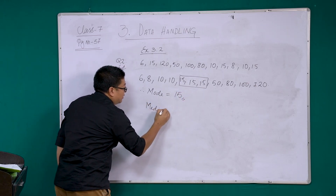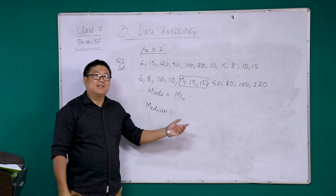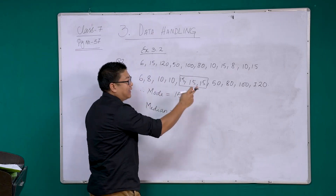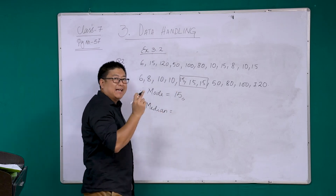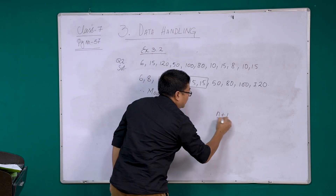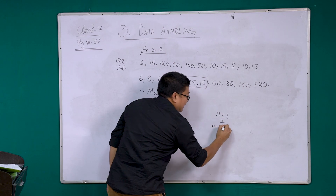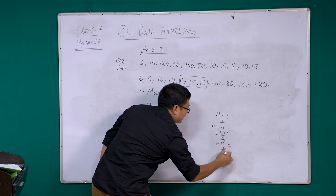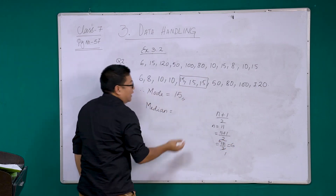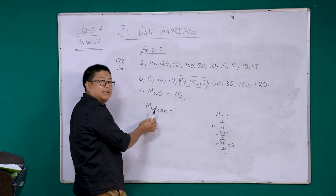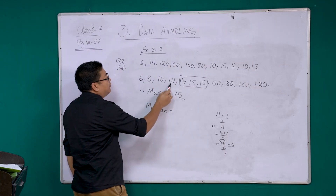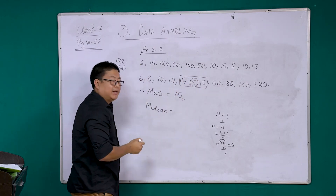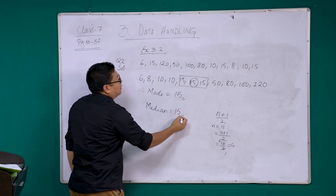Now for median — median means the middle value. Here there are 11 data points, and 11 is odd, so we use the formula (n+1)/2. With n = 11, we get (11+1)/2 = 12/2 = 6. That means in the sixth place you will find the median. Counting to the 6th value in our sorted list gives us 15. So your median is 15.